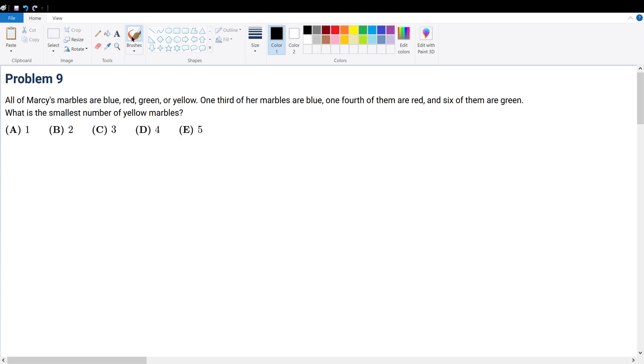Problem 9: All of Marcy's marbles are blue, red, green, or yellow. One-third of her marbles are blue, one-fourth of them are red, and six of them are green. What is the smallest number of yellow marbles? Let's assume the total number of marbles is equal to X, that's the amount she has.